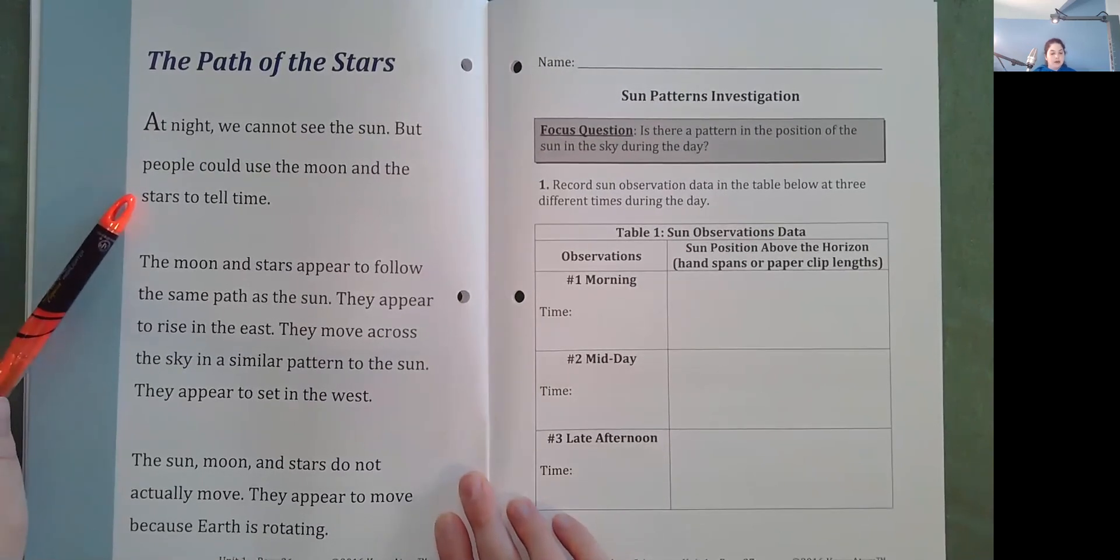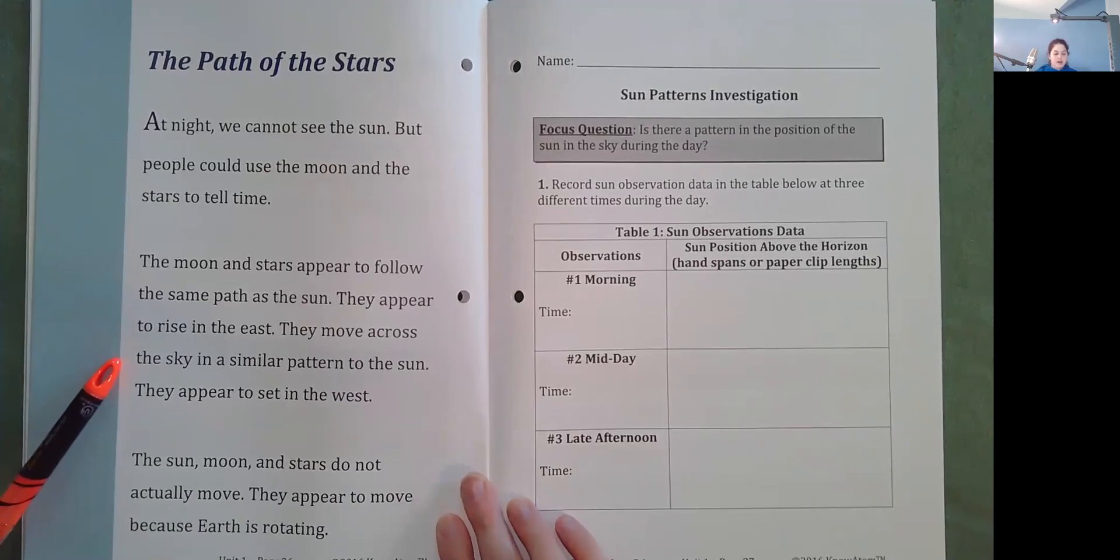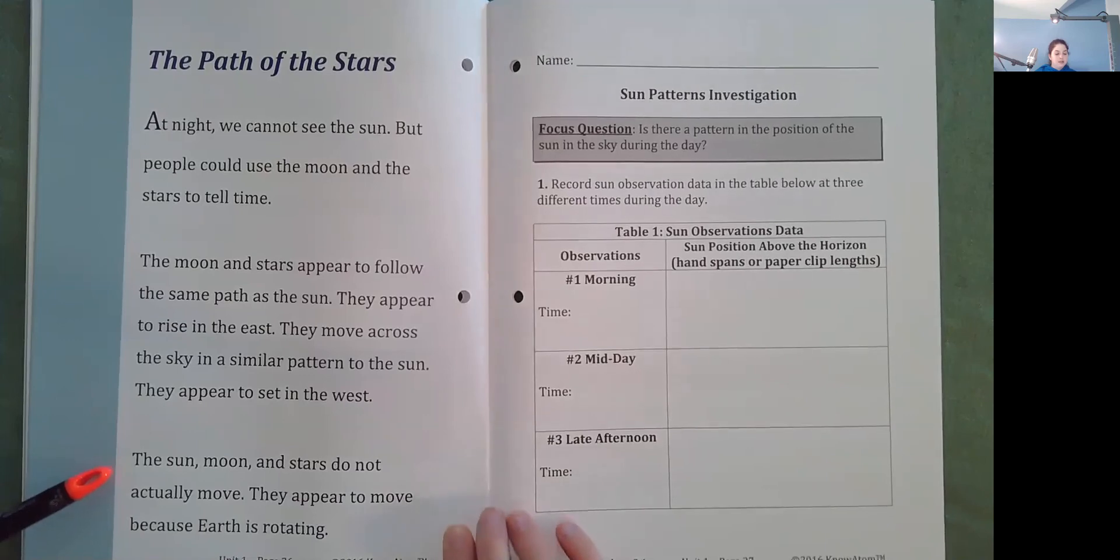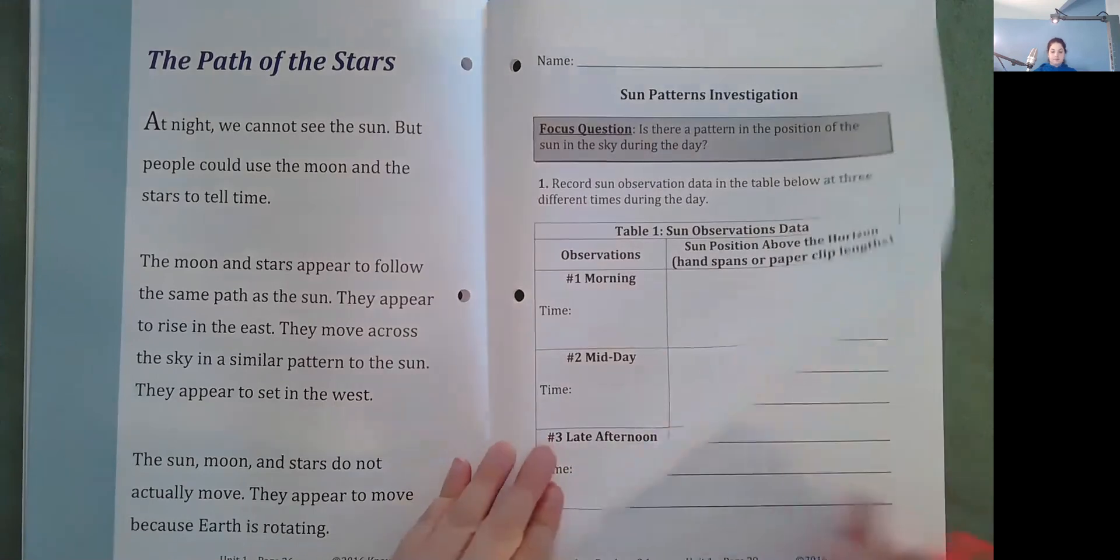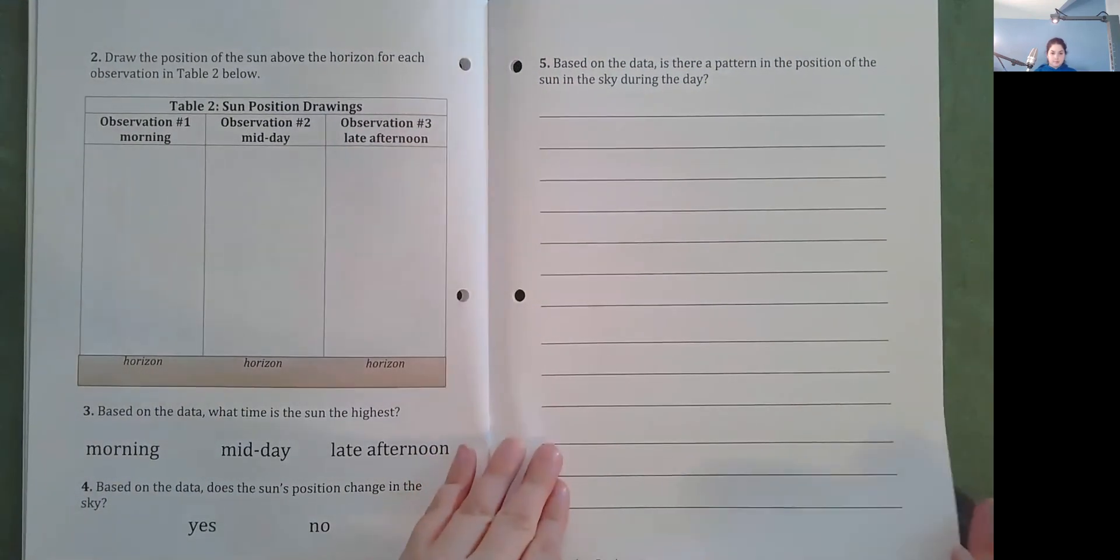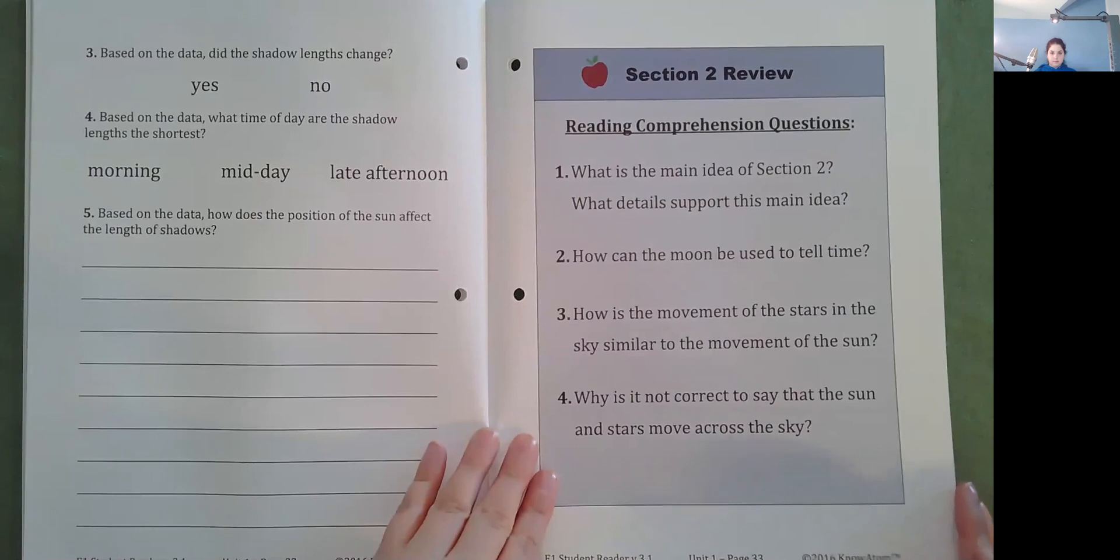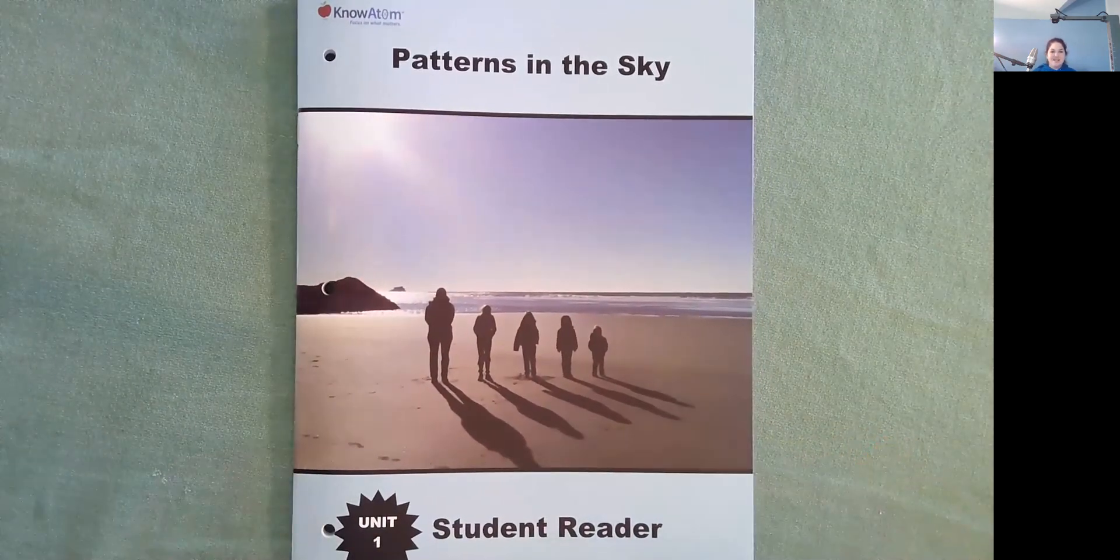The path of the stars. At night we cannot see the sun, but people could use the moon and the stars to tell time. The moon and stars appear to follow the same path as the sun. They appear to rise in the east. They move across the sky in a similar pattern to the sun. They appear to set in the west. The sun, moon, and stars do not actually move. They appear to move because Earth is rotating.